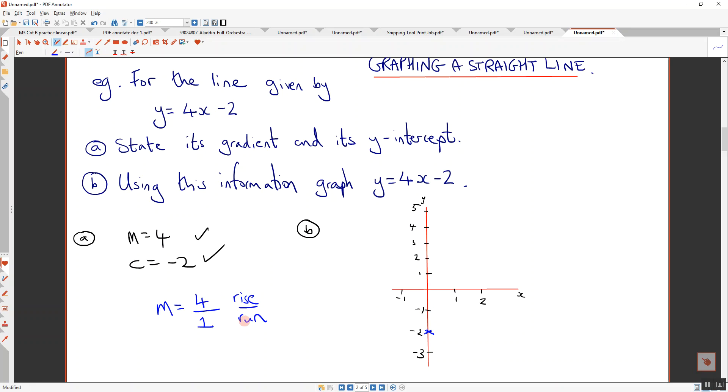Right. So we've got rise over run, so it's 4 over 1. So we go up 4: 1, 2, 3, 4. And we go over 1. And we have our line.